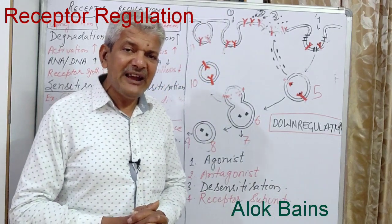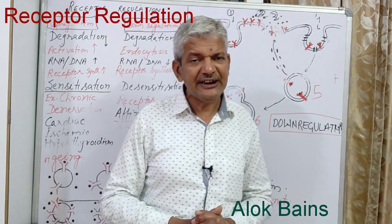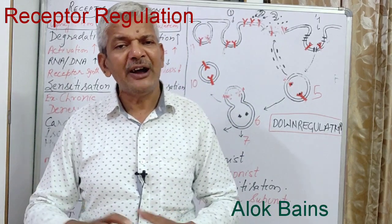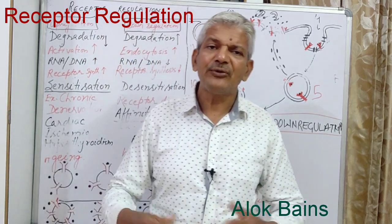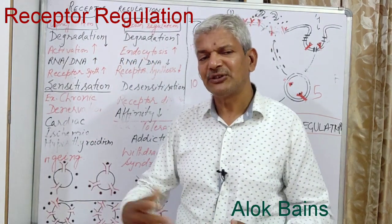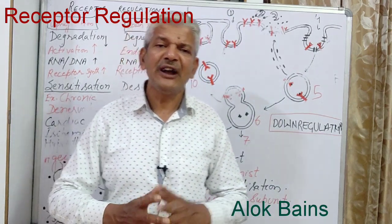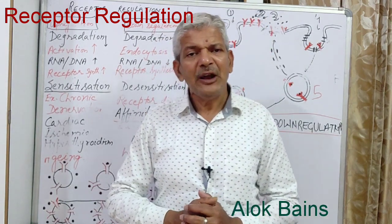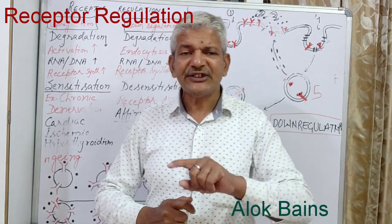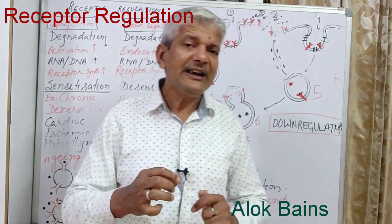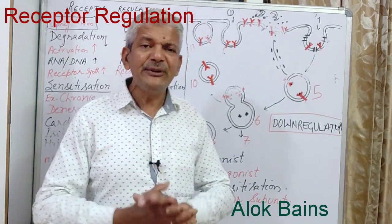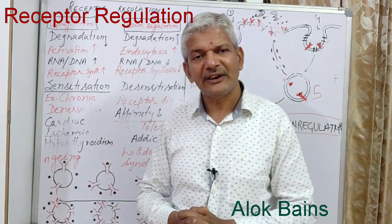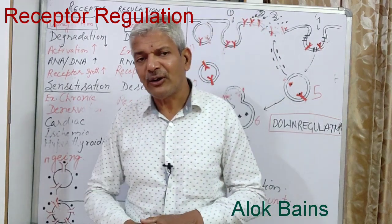The second key word is ligands. Ligands are substances that may be exogenous or endogenous in nature — like neurotransmitters or hormones — that combine with receptors to produce a biological, physiological, or pharmacological effect. If endogenous, they produce a biological effect; if exogenous, they produce a pharmacological effect. The third key word is receptors. Receptors are macromolecules present on the surface of the cell, on the cell membrane, or inside the cytoplasm, that combine with ligands to produce a biological or pharmacological effect.